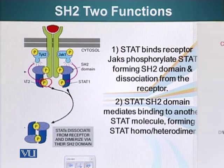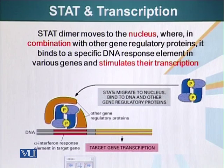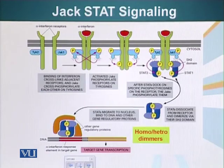This results in release of the STAT molecules and their dimerization through the SH2 domain. This dimer can now go directly to the nucleus, and in combination with other gene regulatory proteins, it can bind to a specific DNA response element and stimulate transcription of specific genes. So this is a very direct shortcut — one of the most direct routes from the cell surface directly to the nucleus.